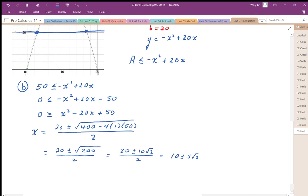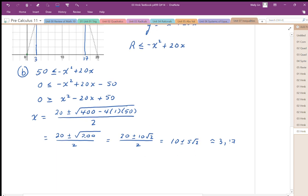Okay, and that's approximately 3 and 17. So at about 3 here, 3 ads and 17 ads here, we know that we're going to have revenues above $50. So the solution is going to be between 3 and 17 ads. Okay, and that represents the number of ads we need to have revenues above $50.